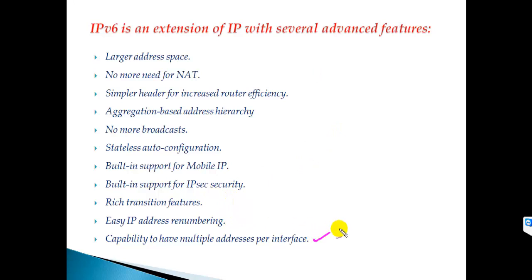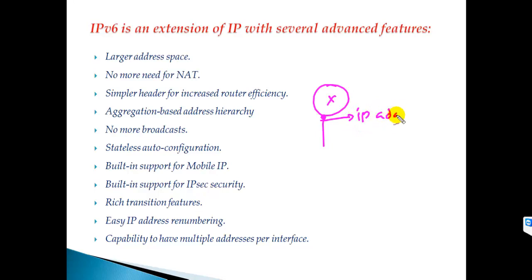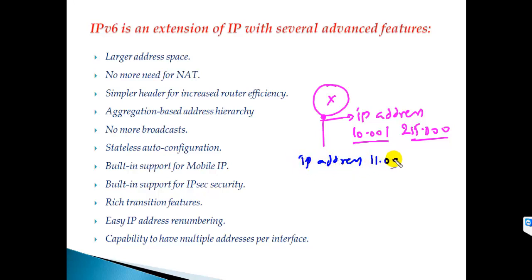Another advantage is that you can have multiple IP addresses on a single interface. In IPv4, on a single router interface, if you assign an IP address like 10.0.0.1 and then assign another address like 11.0.0.1, it automatically overrides the previous one. If you want to use both, you have to use the keyword 'secondary' — but even then, one address is preferred over the other.